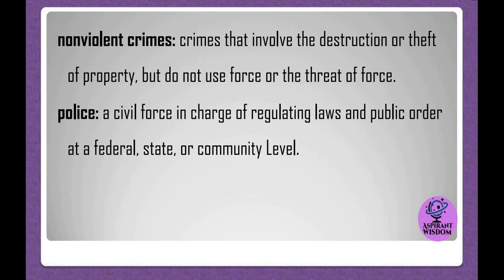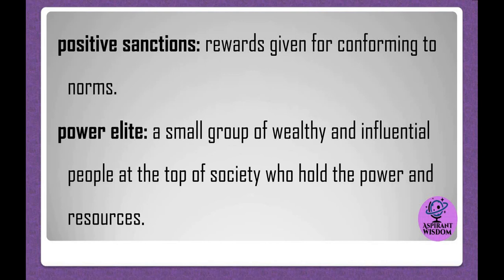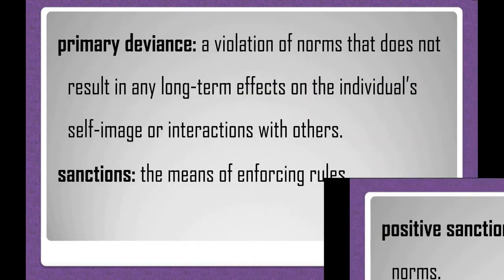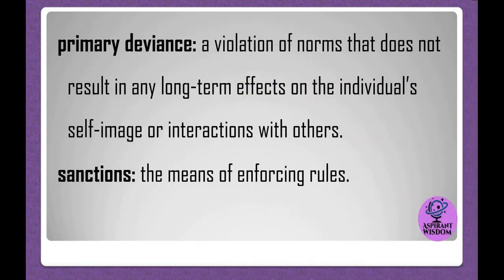Police: a civil force in charge of regulating laws and public order at a federal, state, or community level. Positive sanctions: rewards given for conforming to norms. Power elite: a small group of wealthy and influential people at the top of society who hold the power and resources. Primary deviance: a violation of norms that does not result in any long-term effects on the individual's self-image or interactions with others. Sanctions: the means of enforcing rules.